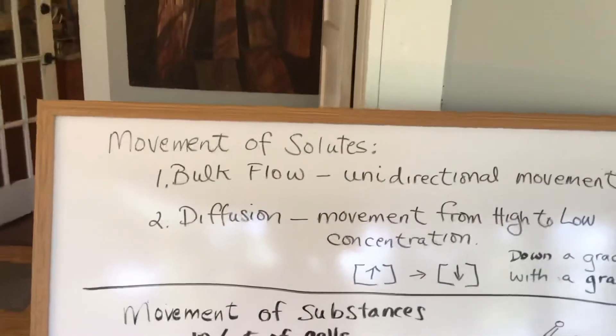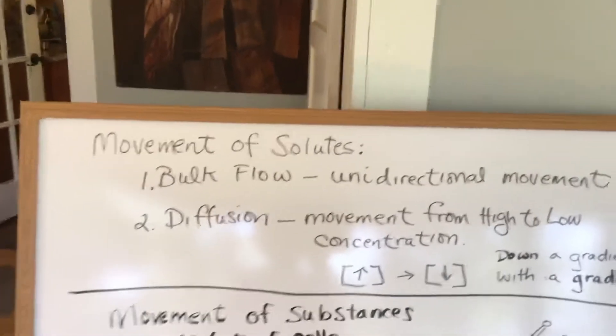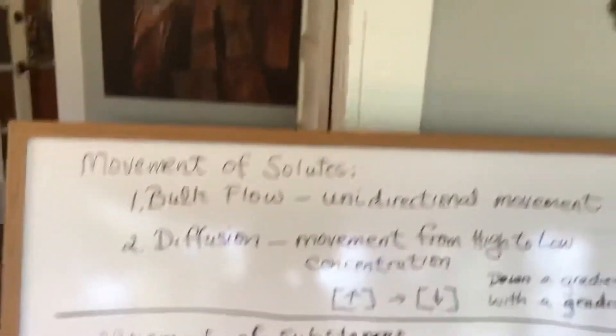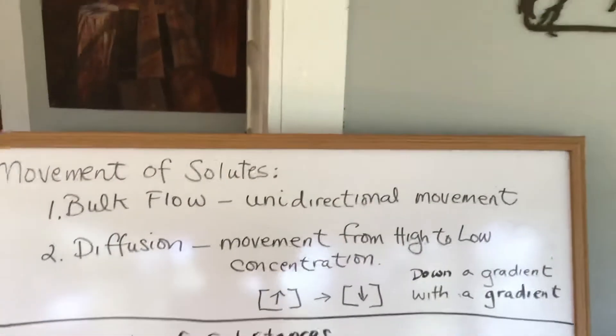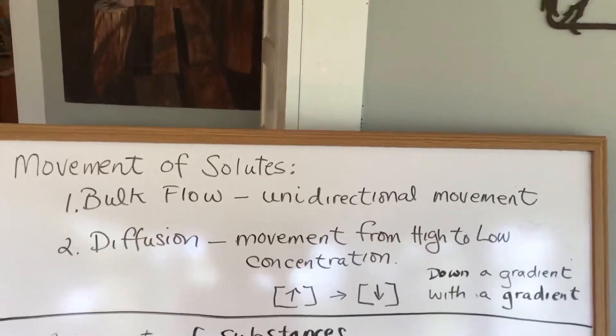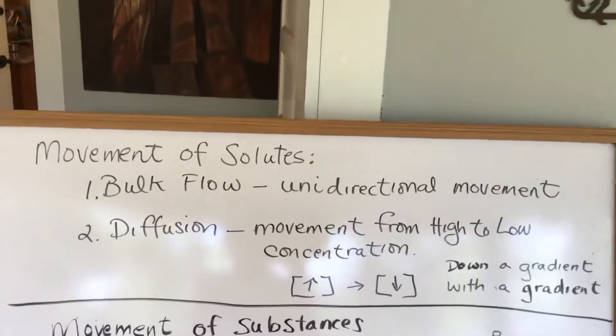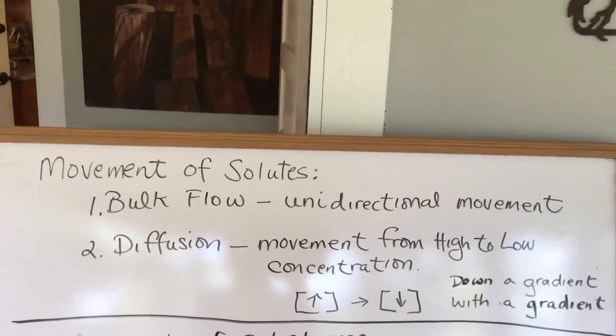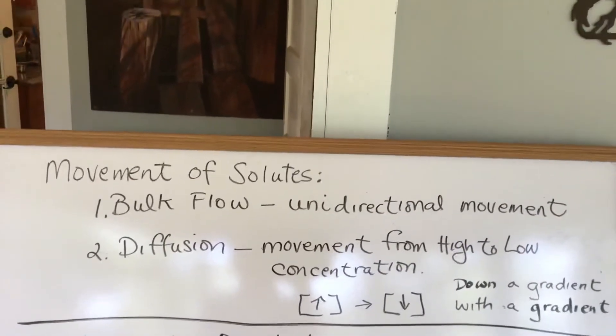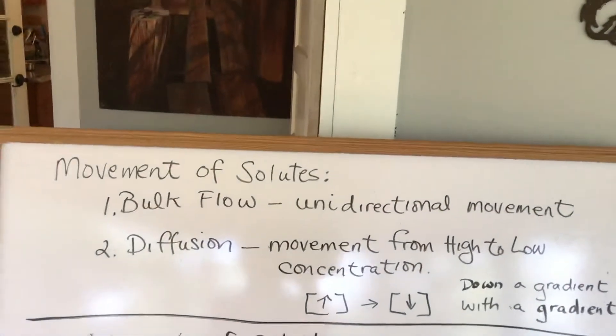And it usually happens the fastest where the concentration or the difference between the concentration gradients is the highest. Once you get close to being almost equal in terms of concentration, then it slows way, way down.